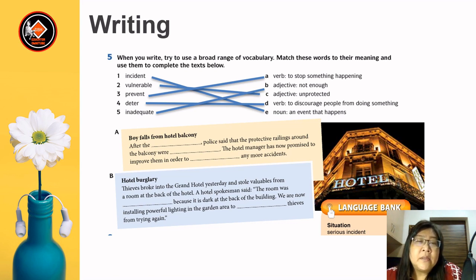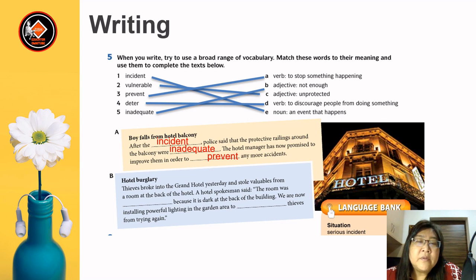Now use all these words in the texts. Text A — 'Boy falls from hotel balcony': After the incident, police said that the protective railings around the balcony were inadequate. The hotel manager has now promised to improve them in order to prevent any other accidents. Text B — 'Hotel burglary': Thieves broke into the Grand Hotel yesterday and stole valuables from a room at the back. A hotel spokesman said the room was vulnerable because it is dark at the back of the building. We are now installing powerful lighting in the garden area to deter thieves from trying again.